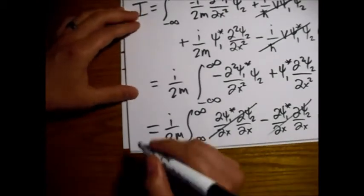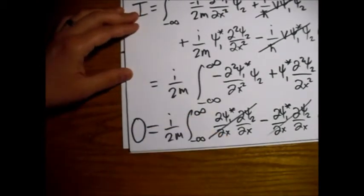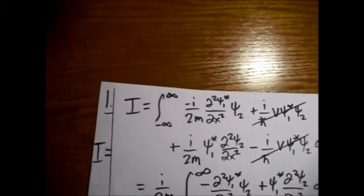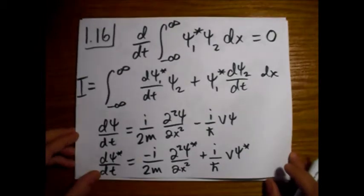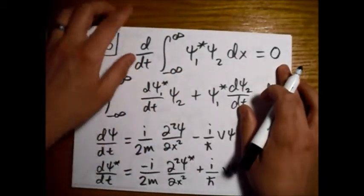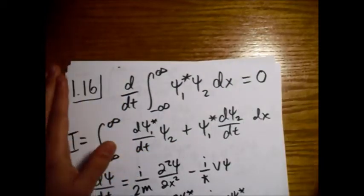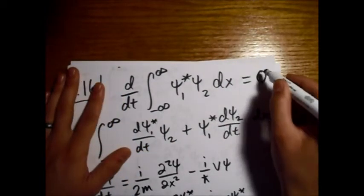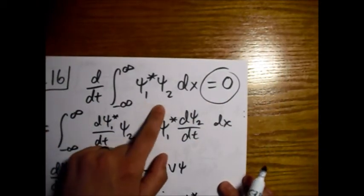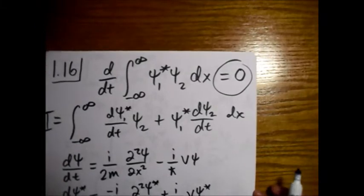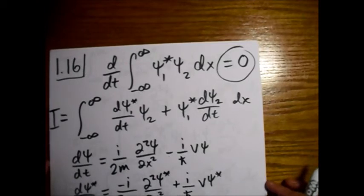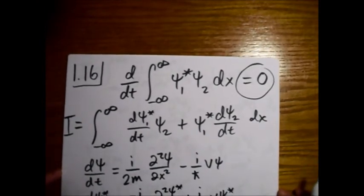So I is equal to zero. And if we jump back to our first page, I was this integral that we were trying to do, which is equal to this expression right here. So what we've just shown is that this expression equals zero. And these coefficients that give us the probabilities of getting these different states, they're not going to be changing with time. So that's good news.